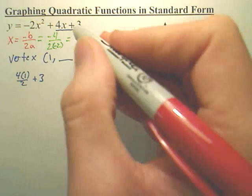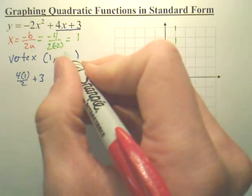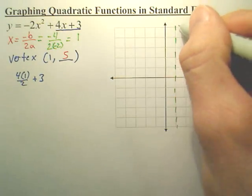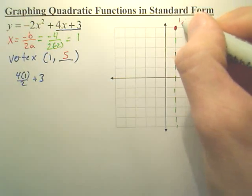So you add the 3. That would be 4 times 1 is 4, divided by 2 is 2, plus 3 is 5. So this means over 1, up 5. Right there is my vertex at (1, 5).